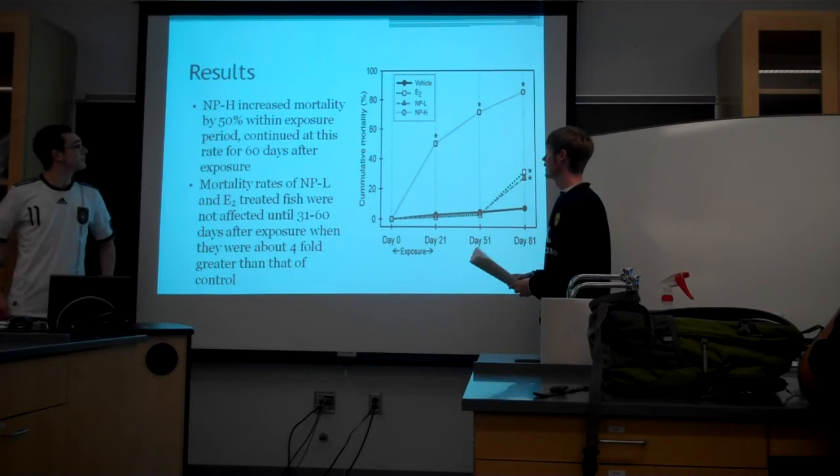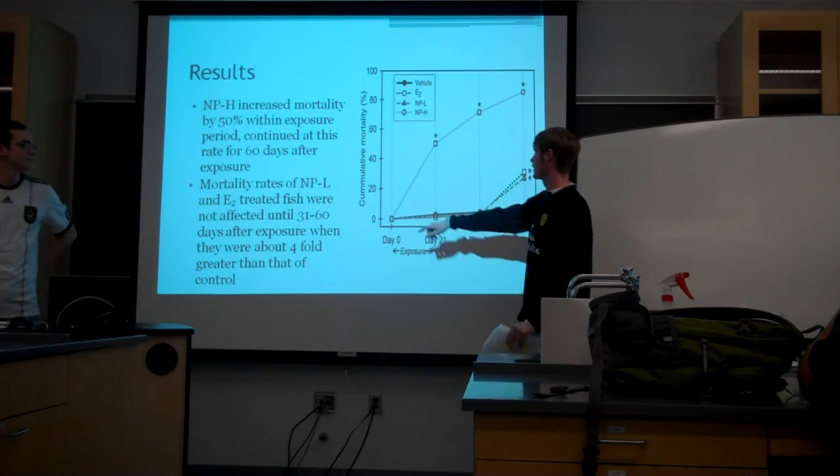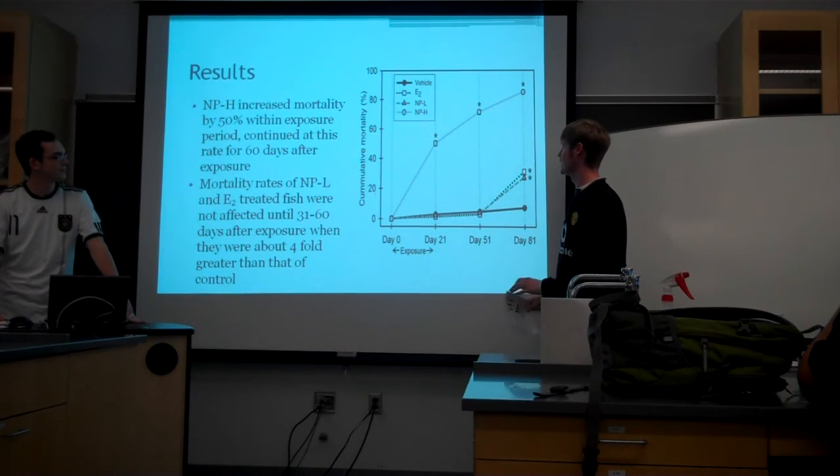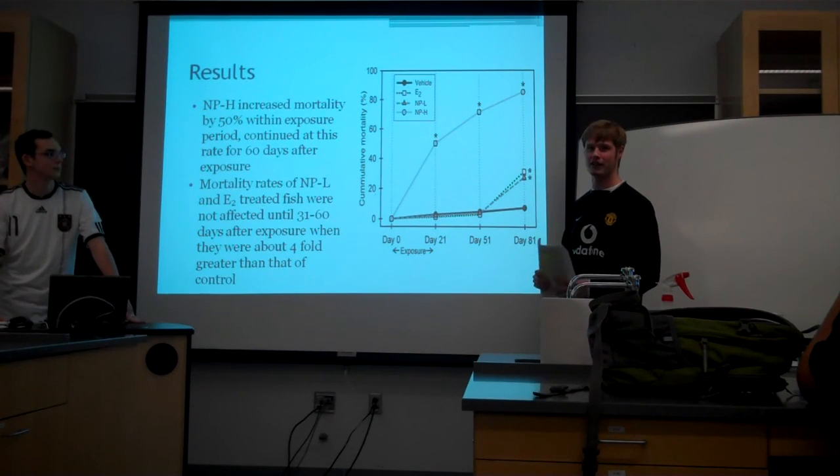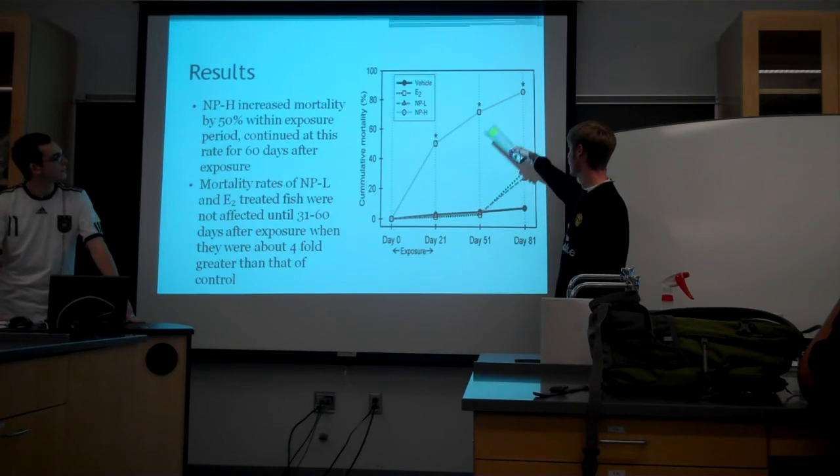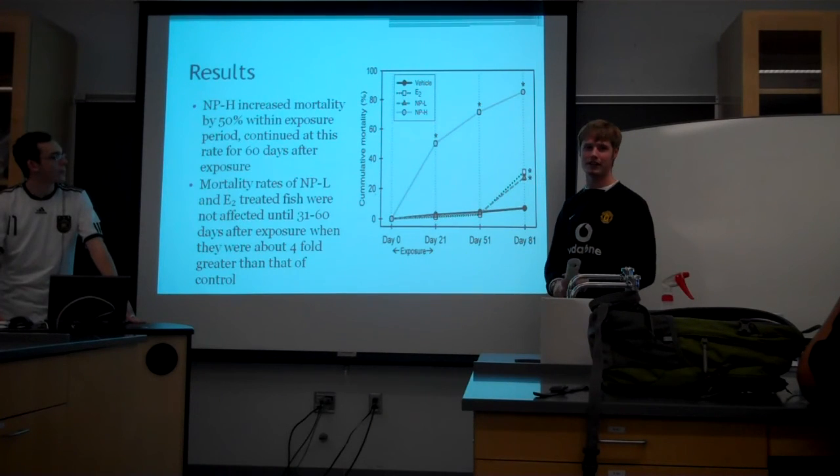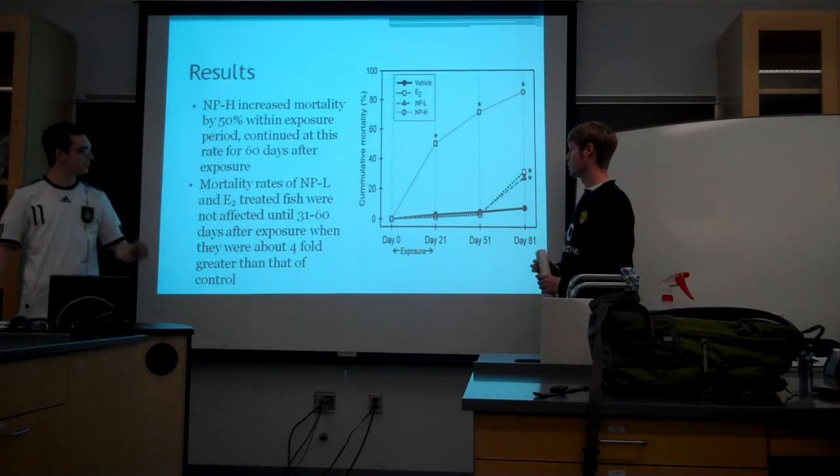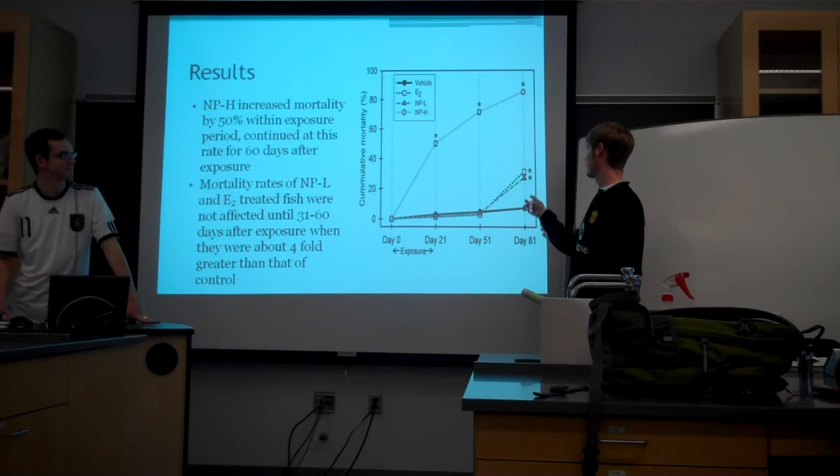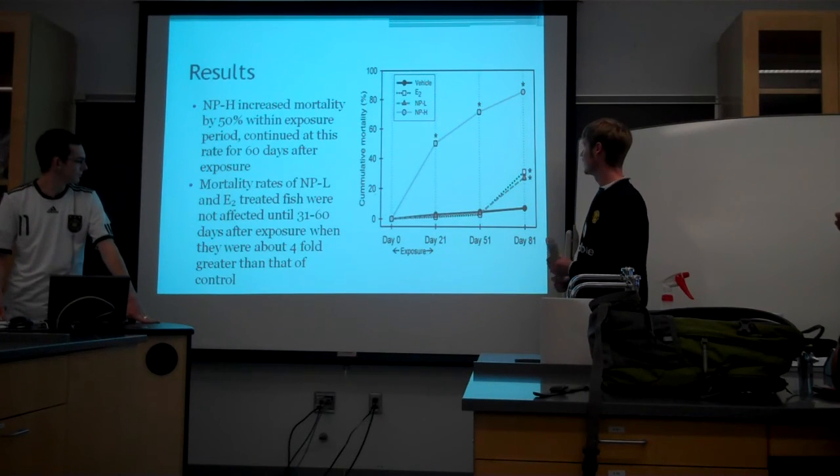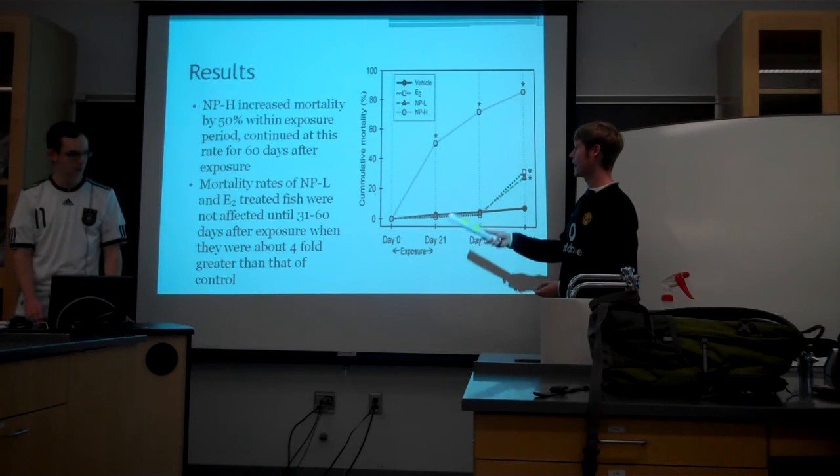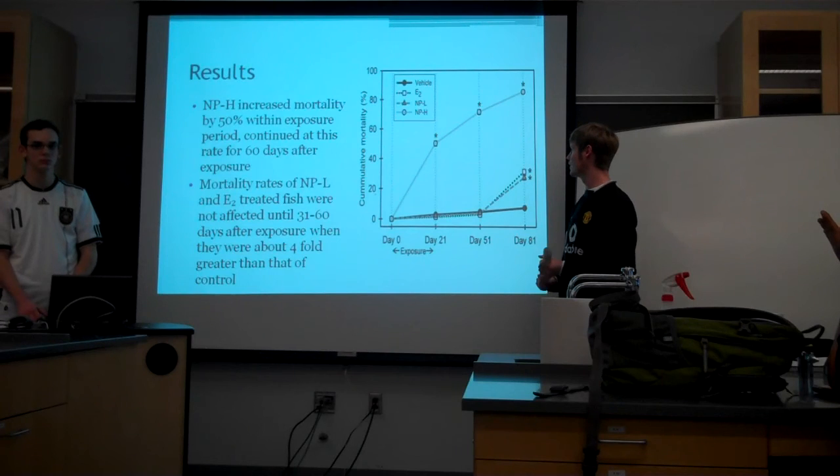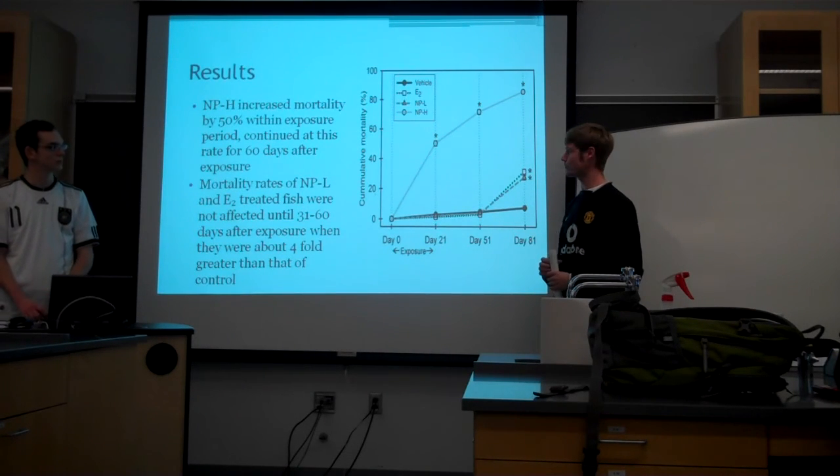Okay, so results. Here this graph shows the mortality rates. These are the mortality rates for the nonylphenol high dosage. This is the low dosage, and this is the estradiol. It's important to see that during exposure, the high dosage of nonylphenol actually had a 50% mortality rate, which continued at that rate for 60 days after exposure, and actually there was 100% mortality 120 days later. So they all died. And then you can see the important thing here is that between 30 and 60 days after the treatment for the low doses of nonylphenol and estradiol, there's actually a four-fold increase in mortality. And just to note that they actually didn't really continue quantifying the high dosage of nonylphenol because it's just not really relevant. There's not 100 micrograms in any rivers that they've tested, so they kind of just let that one alone as just an outlier.